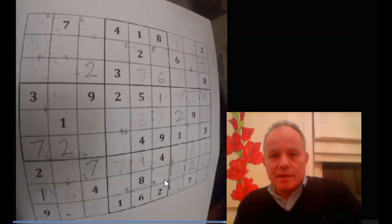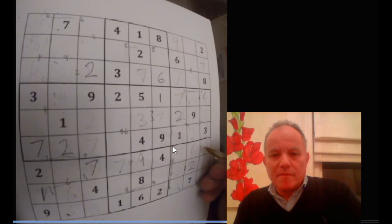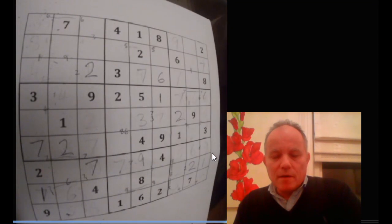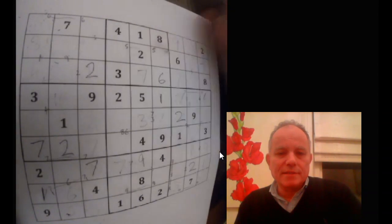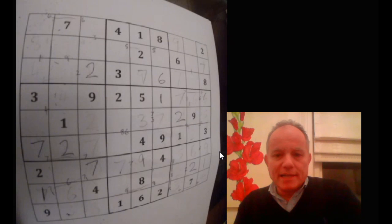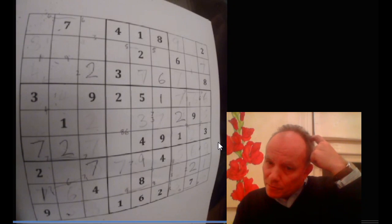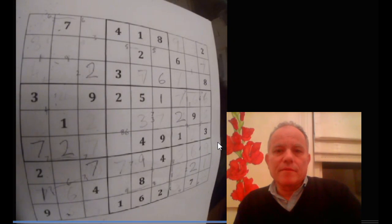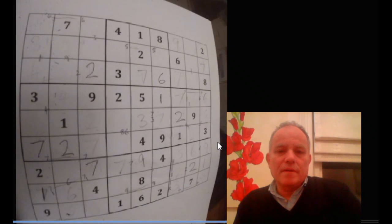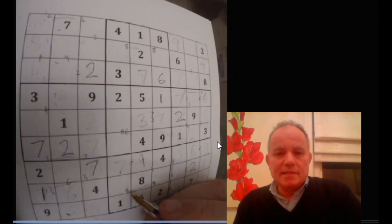Hopefully now we can proceed. The grid's a bit of a mess with all the rubbing out, and one has to be a bit careful in competition or even in solving like this to make sure that you're not accidentally seeing an old pencil mark and thinking it's something that you've validly proved at the moment. Care has to be taken with this method, if one can call it a method.